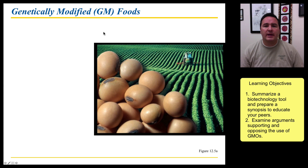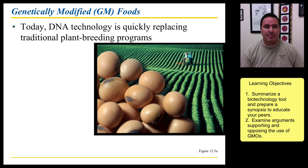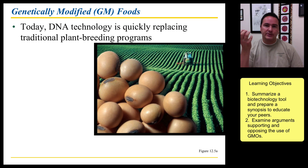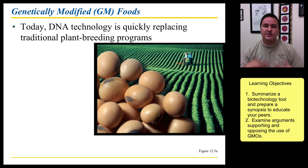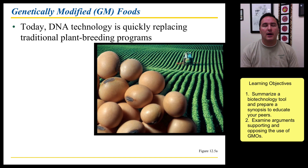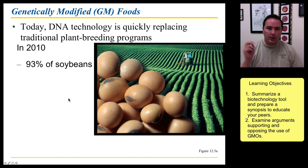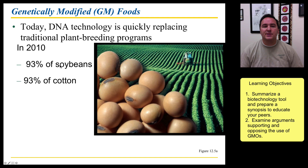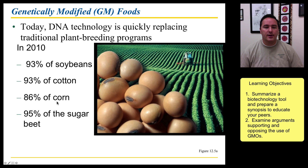Foods have also been getting genetically modified — we've been modifying plants. This is really replacing traditional plant breeding programs. In the old days, farmers used artificial selection: they'd find the apple trees producing the best, sweetest, biggest, reddest apples, let those seeds germinate, and over successive generations the whole orchard became that ideal apple. But now we can change the genetics in one generation without going through selective breeding. Currently, 93% of soybean crops are genetically modified, 93% of cotton, 86% of corn, and 95% of sugar beets — a large proportion of all crops grown are genetically modified.